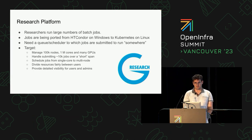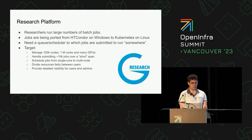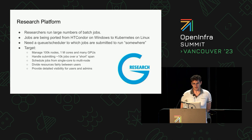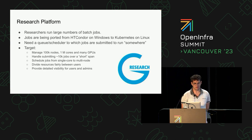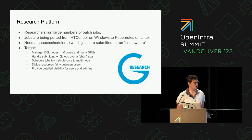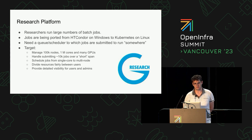What are our requirements? G Research runs large amounts of batch jobs — on the order of around a couple million jobs per day — which varies widely by job type. Our target is around 100,000 nodes, a million cores, and we provide a lot of GPU accelerators for our quantitative analysts to speed up their simulations.